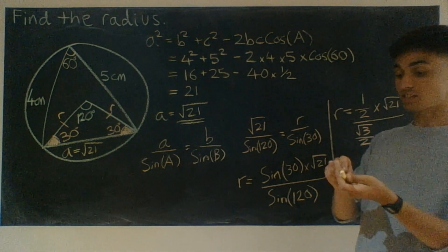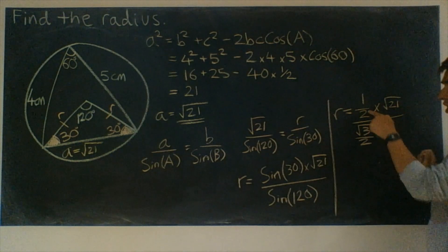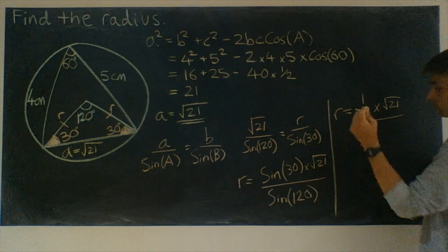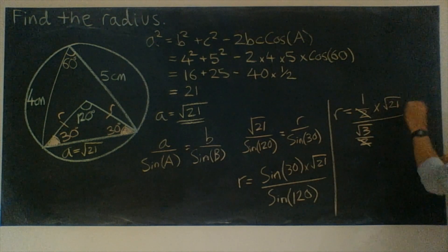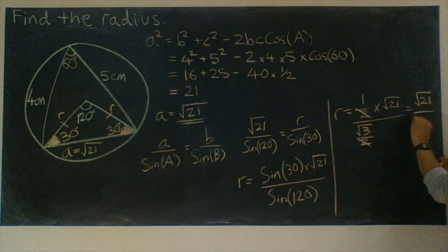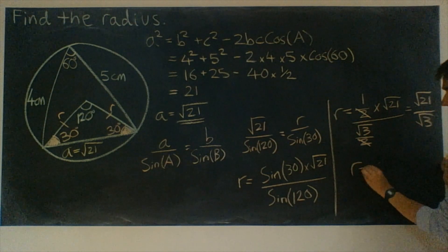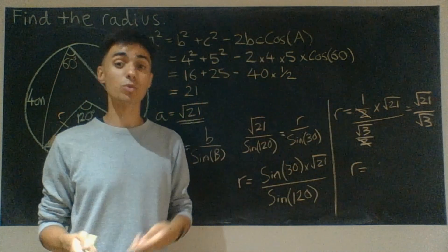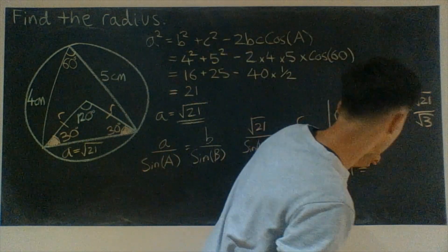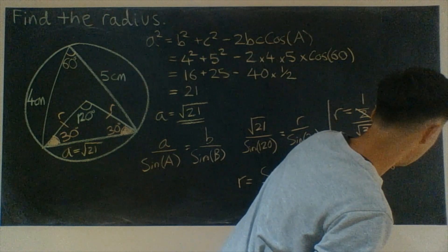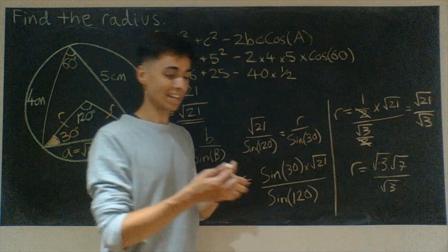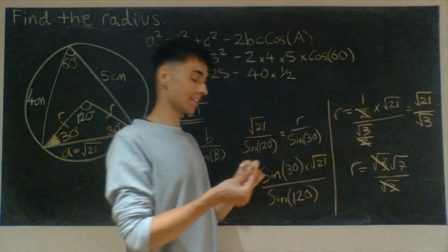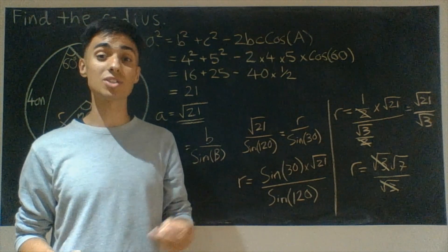And at this point, we can start to see some things nicely cancelling out. One half and root 3 over 2, both have a factor of 2 on the bottom. So let's get rid of those. And what we're left with then is we've got root 21 over root 3. And thinking about this, this is our very last thing to do. Root 21, we could write that as root 3 times root 7. So that could look like this: root 3 times root 7 with a root 3 on the bottom. And definitely now those two root 3s can cancel out with each other. And that would leave us with our answer, which tells us the radius is the root 7.